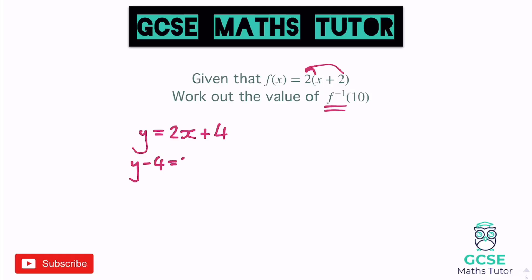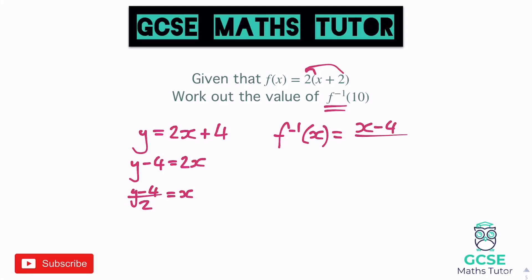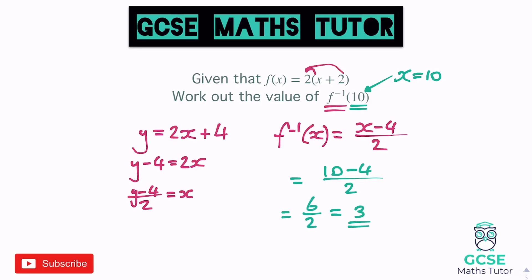Let's find the inverse function. Subtract 4 from both sides: y minus 4 equals 2x. Divide by 2: y minus 4 over 2 equals x. So f minus 1 of x equals x minus 4 over 2. Whenever you're given a number in the brackets, it just means replace x with that number. So all I'm going to do is substitute x equals 10 into the expression: x minus 4 over 2 becomes 10 minus 4 over 2. That's 6 over 2, which gives a value of 3.